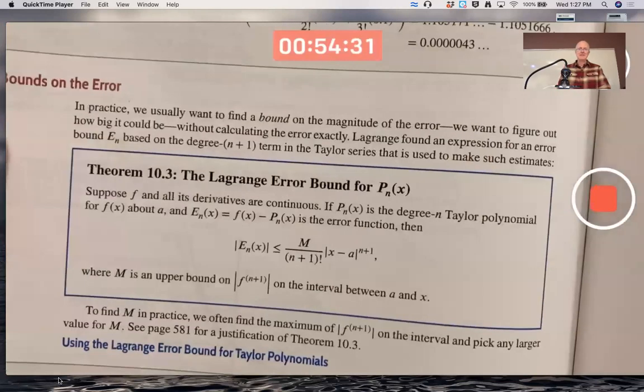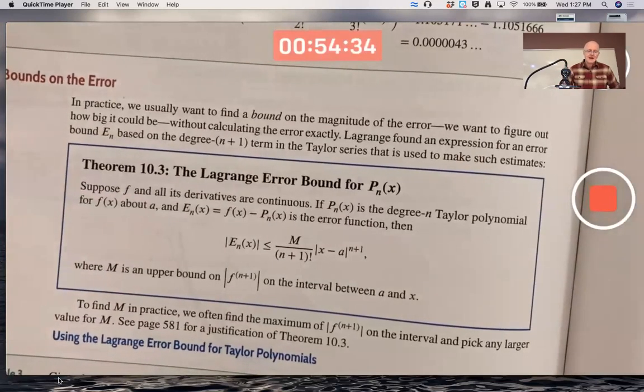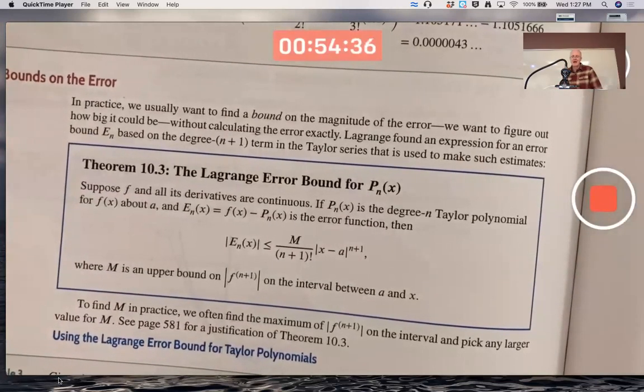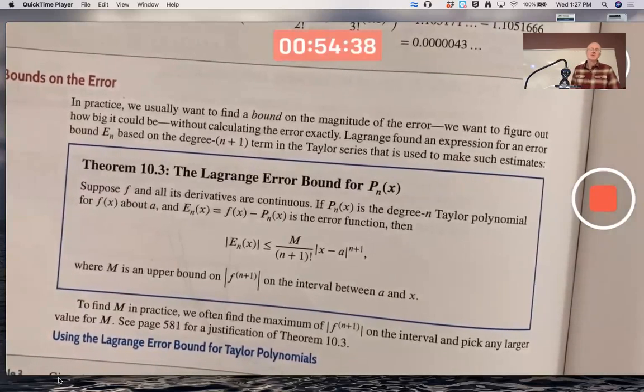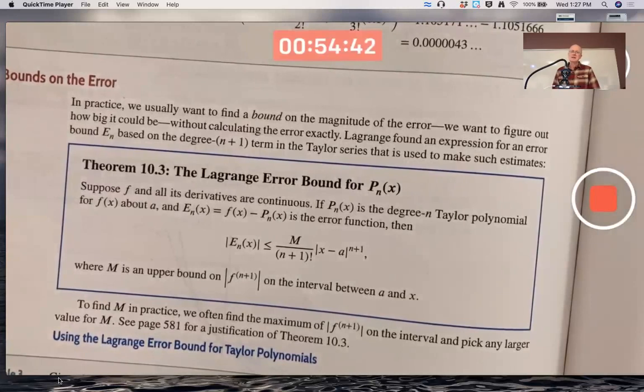This theorem is the main thing. It's on page 578. It's called the Lagrange error bound theorem for a Taylor series. I think it probably is worth writing this down. Even though it's in your book, it's on page 578. Although I'm going to make a change to the very last line. So don't write that last line quite yet if you do write it down.